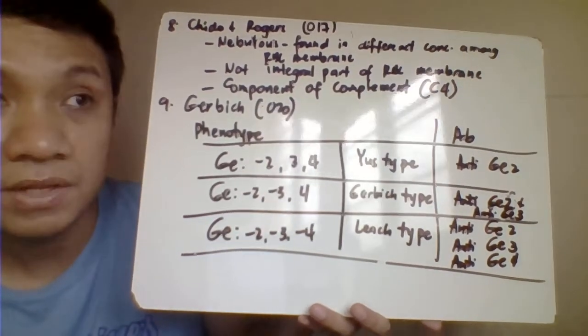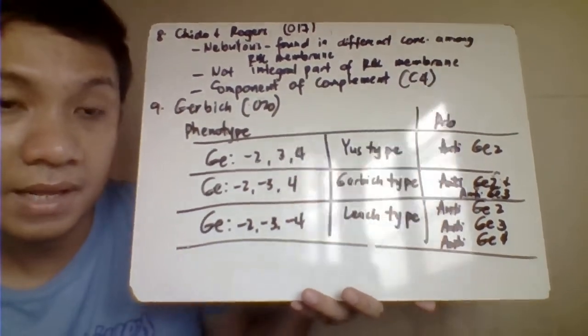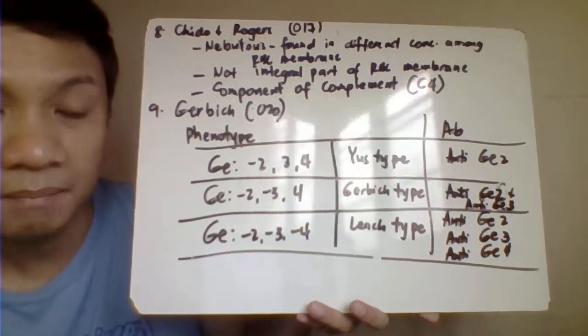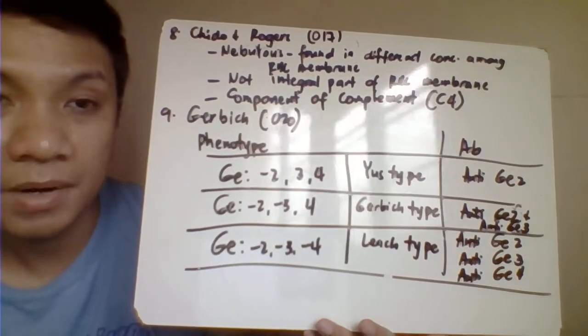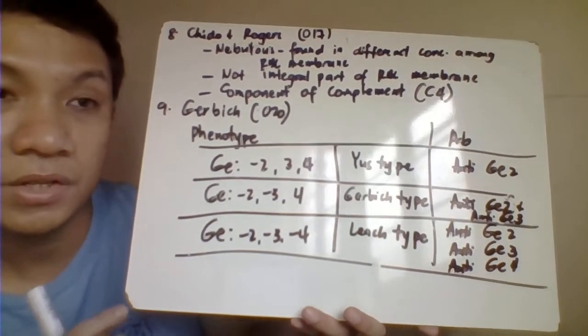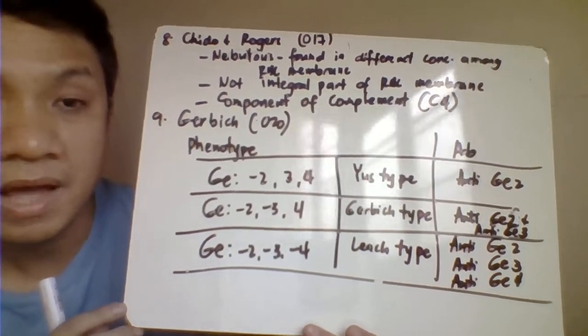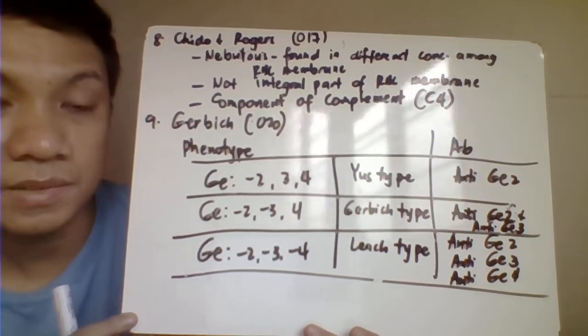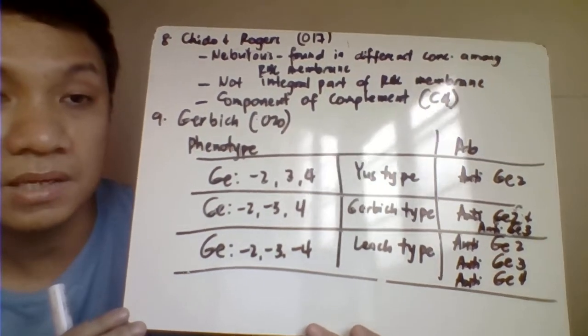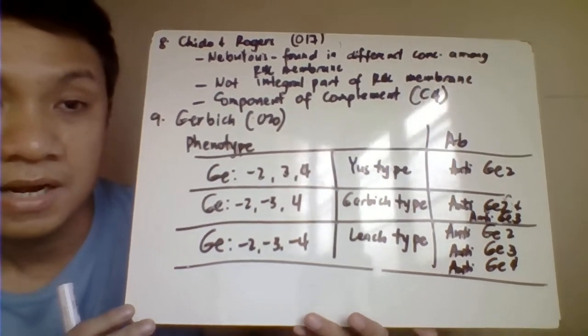And that's what we have discussed with your Kell blood group system. Basically, your Kell blood group system is associated with your Gerbich blood group system in such a way that if the patient would have a decreased expression of the Kell blood group system, expect also to have a decreased expression of the Gerbich antigen.